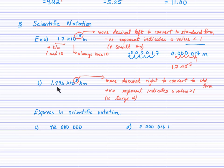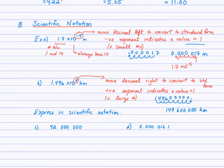What happens if the value has a positive exponent? As you can see in this example, we have a positive exponent of 8, which indicates that this value will be much greater than 1. The positive exponent tells us to move the decimal right to convert it to standard form. Moving the decimal 8 places to the right and spacing every 3 digits, we have 149,600,000 kilometers — which happens to be the distance from the Earth to the Sun.